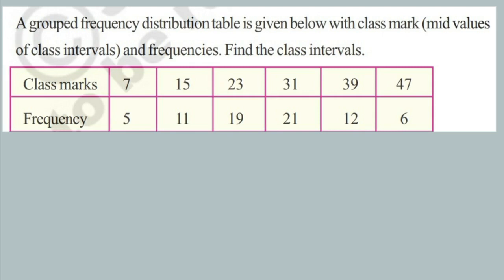Before going to the topic, just don't forget to subscribe this channel and please share this channel with your friends. Here is the problem — just observe it. A grouped frequency distribution table is given below with class marks. Class marks are the mid values of the class intervals. In this question only class marks and frequency are given, and we need to find the class intervals.